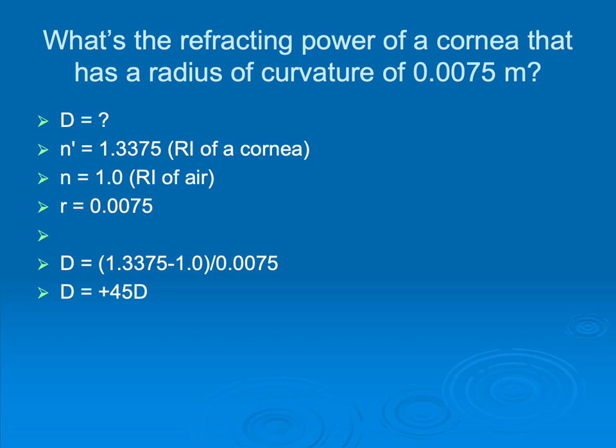So let's put some numbers to this thing. What's the refracting power of a cornea with a radius of curvature as shown here? So we put everything into that formula, and you can see that we come out with a value of 45 diopters, which sounds a heck of a lot like a K reading, as it should.